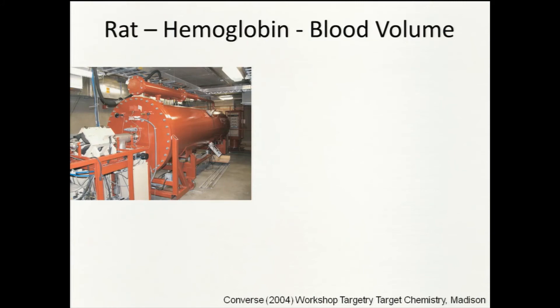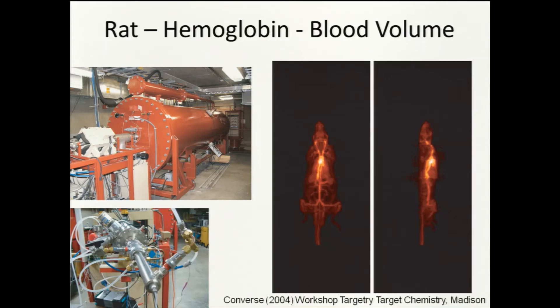In the rat, we looked at labeled hemoglobin to look at blood volume. We have a lower-energy tandem linear accelerator in a psychology lab for creating short-lived blood flow tracers and developmental chemistry. In the target we made radioactive carbon-11 labeled carbon monoxide, administered it to a rat by inhalation, and got pictures of blood volume showing where the labeled hemoglobin went.